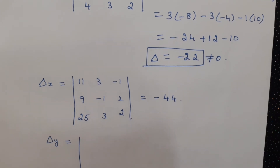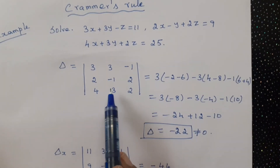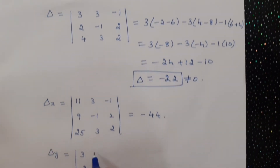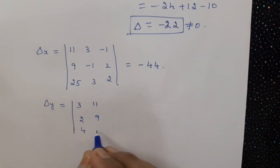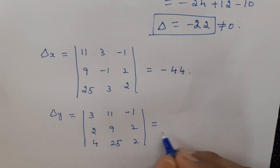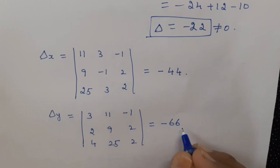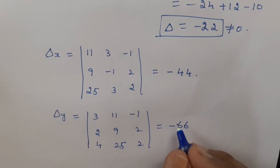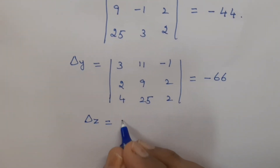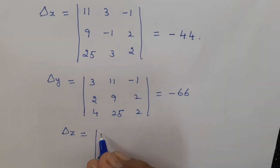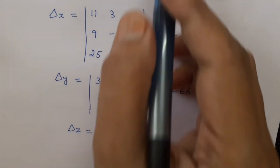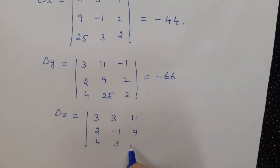Then find delta y. Delta y is the determinant where we replace the second column in delta by the constant terms 11, 9, 25, with the first and third columns unchanged. Expanding this determinant, the value of delta y is minus 66. Then delta z: replace the third column by the constant terms, with the first two columns — 3, minus 1 and 3 — remaining the same, and the third column becomes 11, 9, 25. The value of this determinant is minus 88.